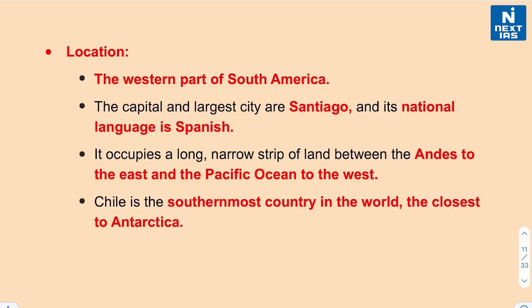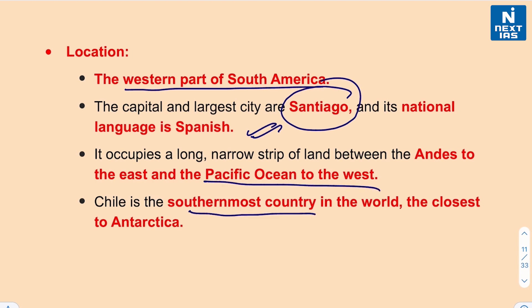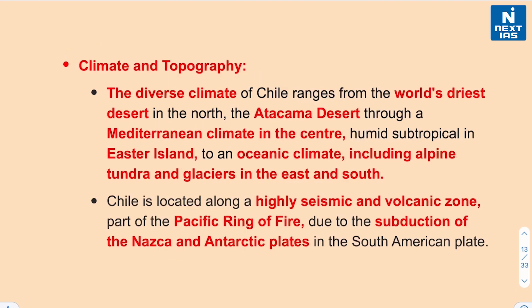Chile is on the western part of South America with capital city Santiago and the national language is Spanish. Chile occupies a long narrow strip of land between the Andes mountain ranges to the east and the Pacific Ocean to the west. It is also the southernmost country in the world and hence closest to Antarctica. The diverse climate ranges from the world's driest desert in the north — the famous Atacama Desert — through Mediterranean climate in the center, humid subtropical climate in Easter Island, to oceanic climate including Alpine, Tundra, and glaciers in the east and south.